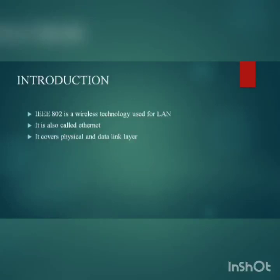Wireless LANs can be found on college campuses, in office buildings, and in public areas. The two promising wireless technologies for LANs are IEEE 802.11 Wireless LAN, sometimes called Wireless Ethernet, and Bluetooth, a technology for small wireless LANs.